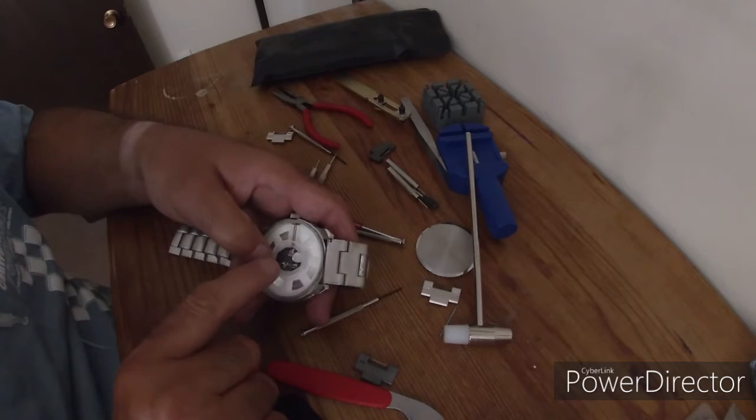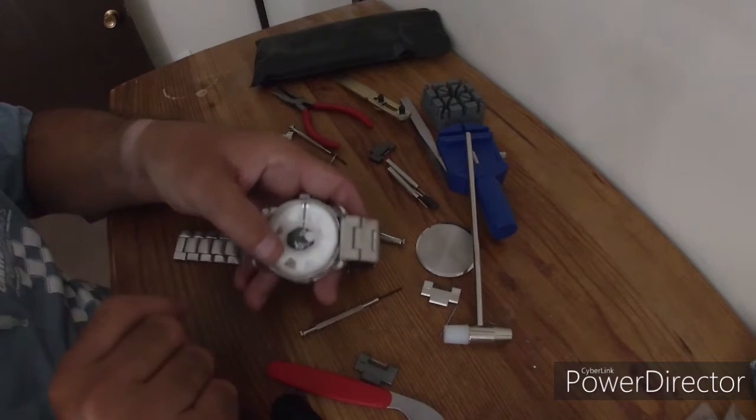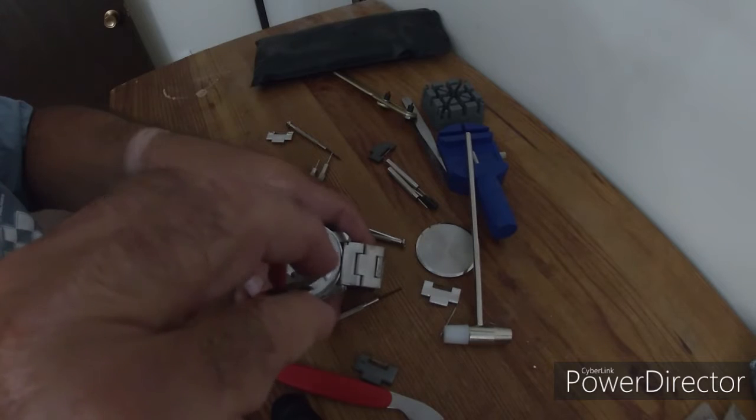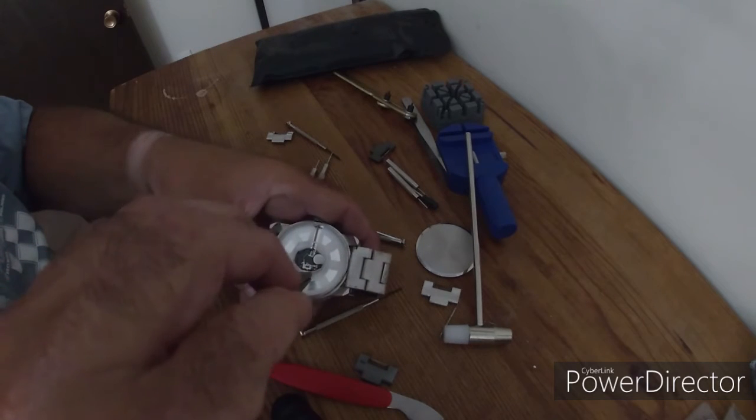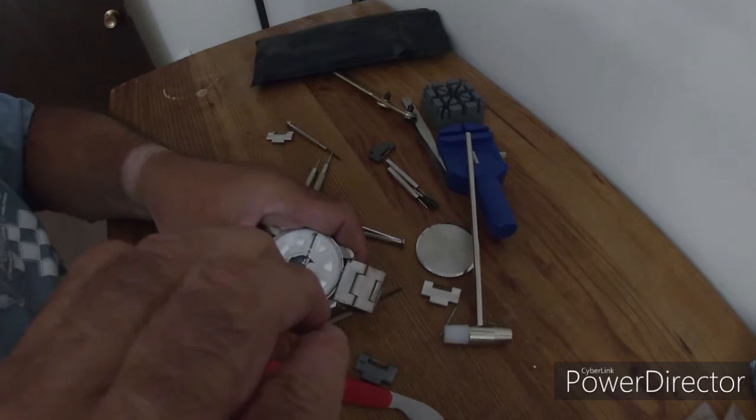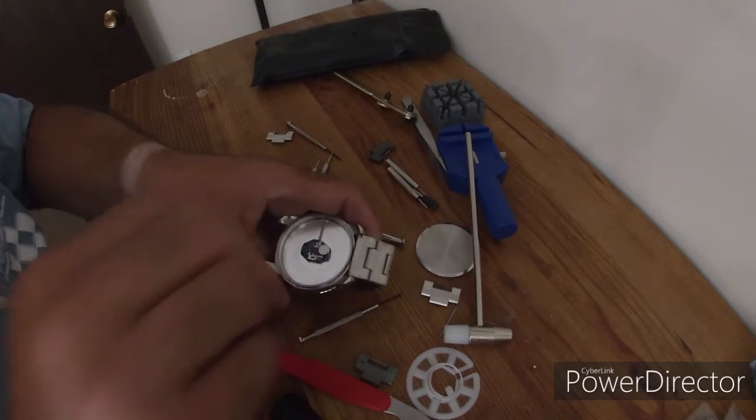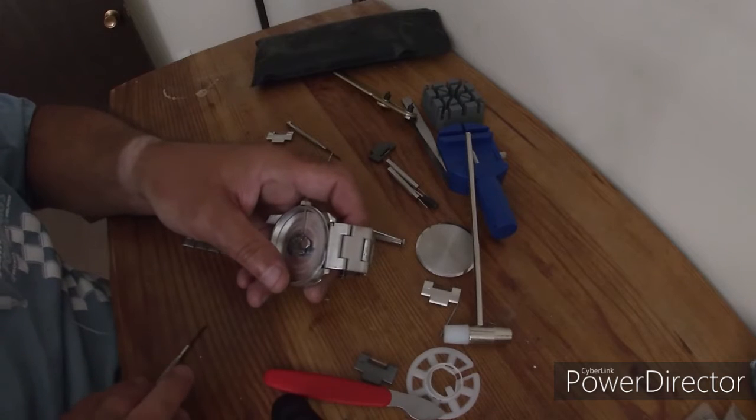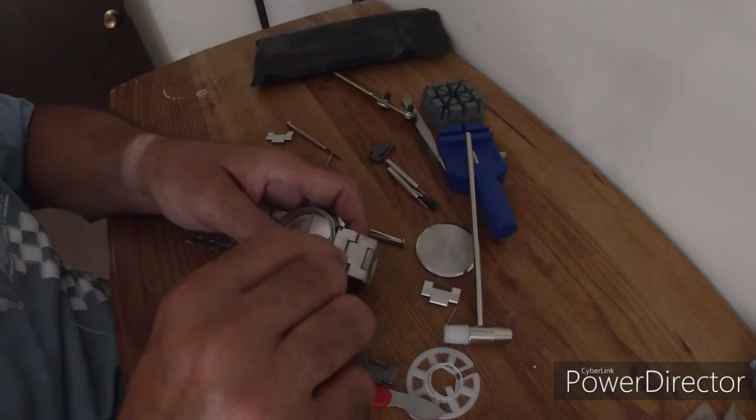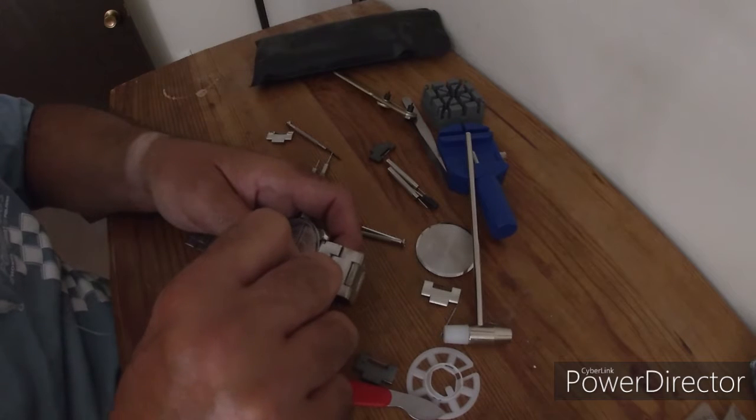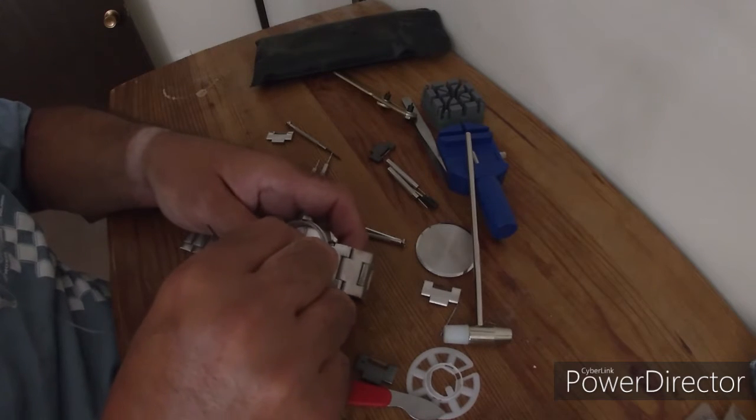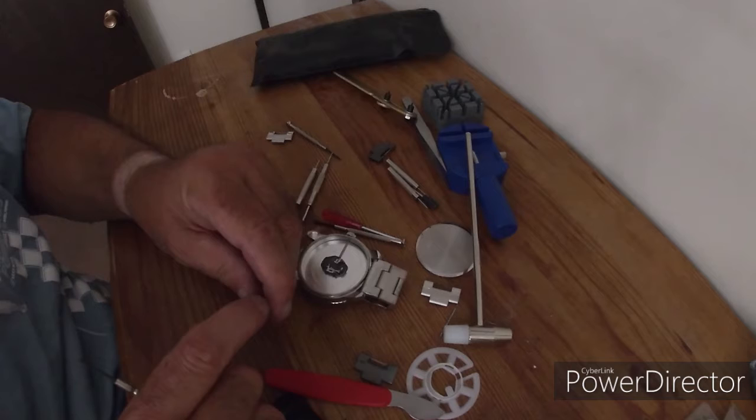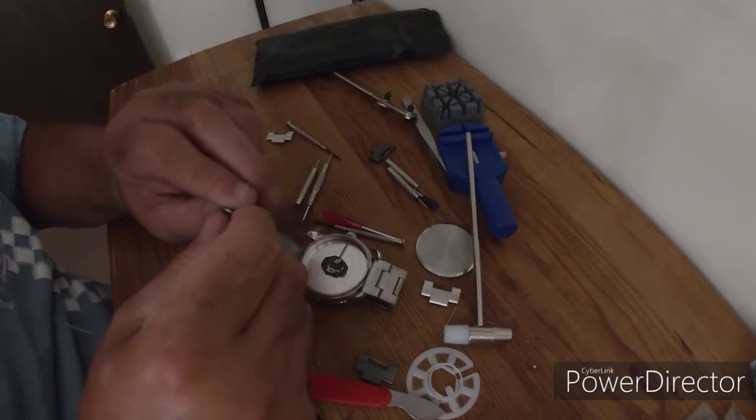I need to replace that tiny little battery. So what I'm going to do is pull this plastic holding piece out and take that little tiny battery out. Now see if I have one of these little tiny batteries.